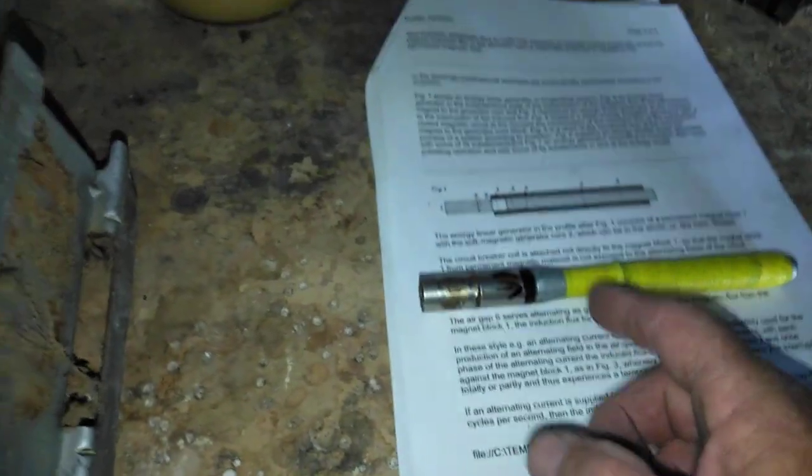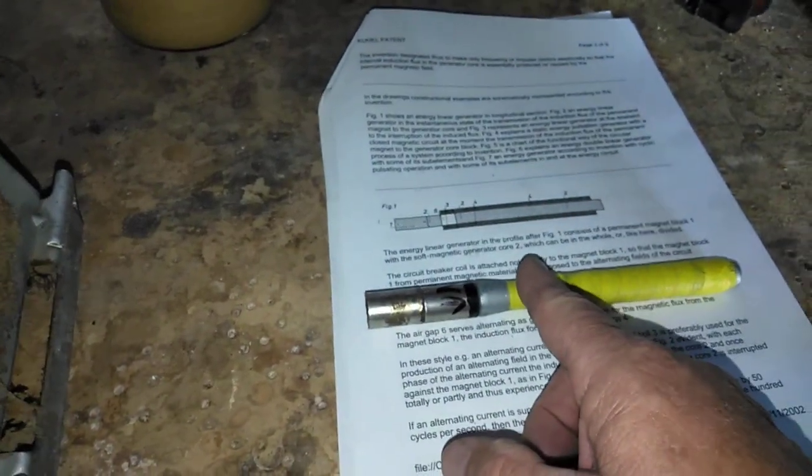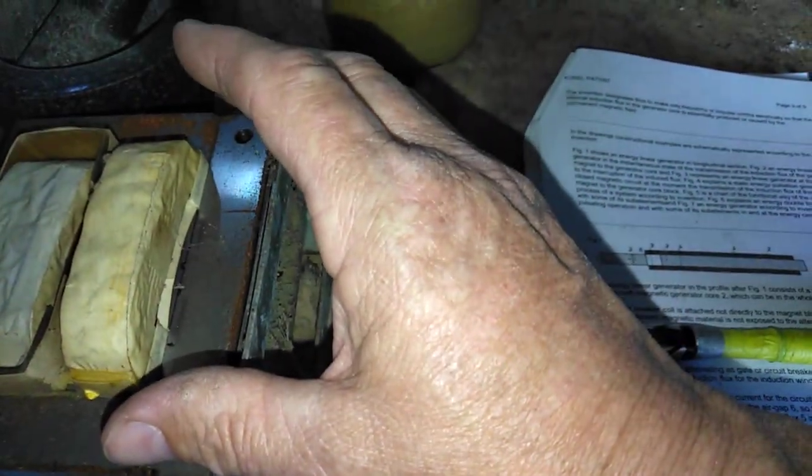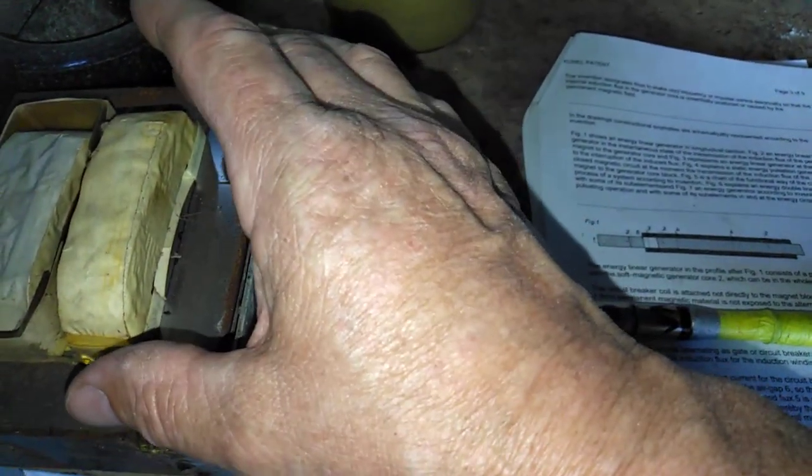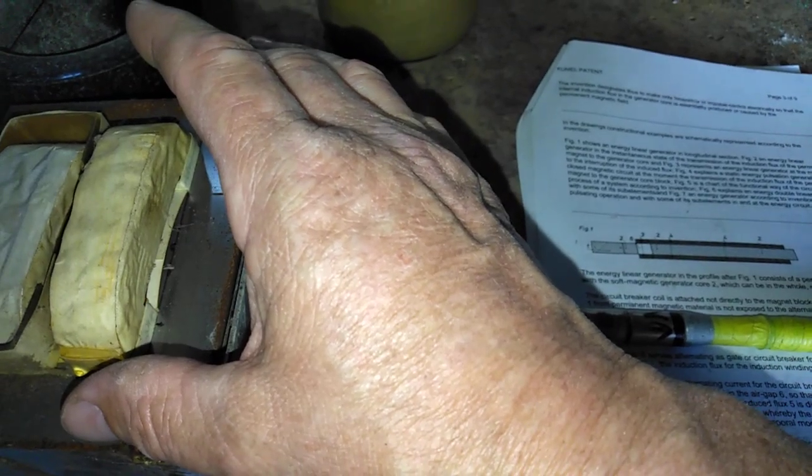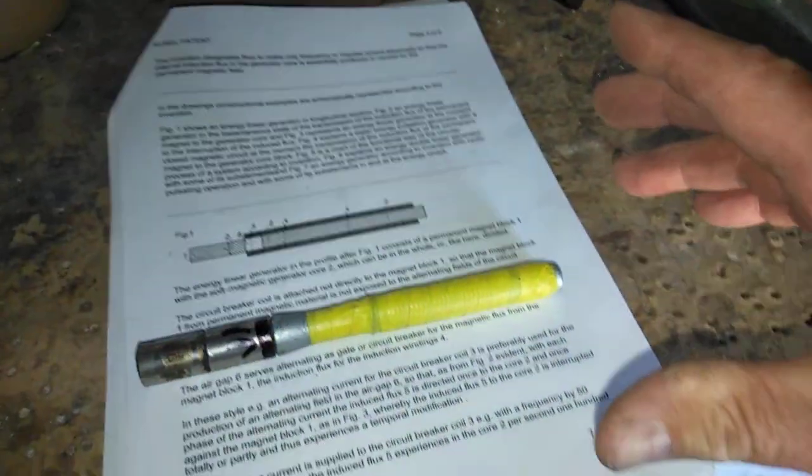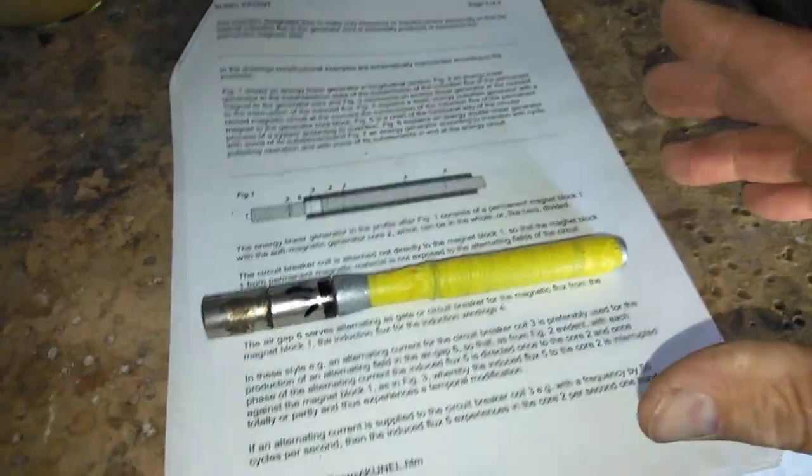So every time that fires, that coil fires with the DC pulse and cuts off the flux. And then what will happen is once the coil shuts off, the flux will again go through the rest at a rate of about 300 kilos.